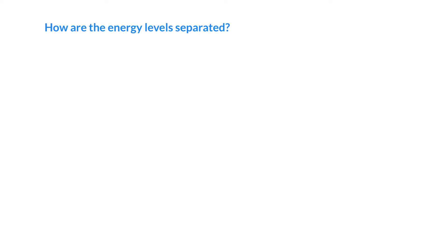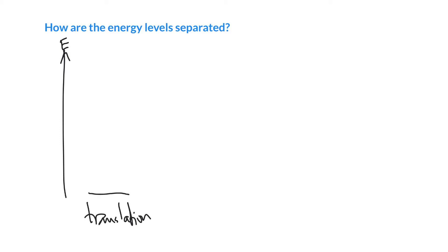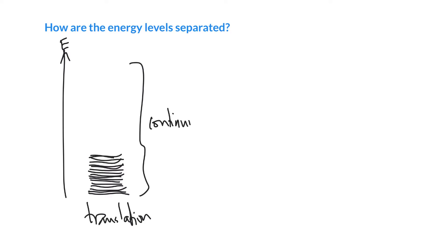It's helpful to have an idea of what the energy levels look like for different types of motion. For translation — just motion through free space, not a particle in a box — we saw that the energy is not quantized and energy levels can take essentially any value. So there's a giant continuum of energy levels. If you put it inside a box the energy becomes quantized, but in free space there's basically no gap at all between energies.